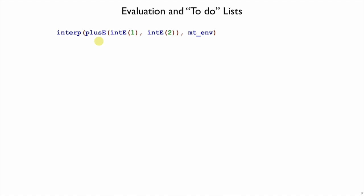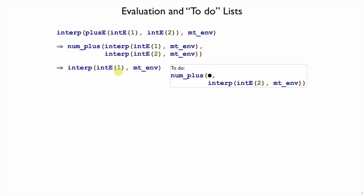Consider what happens when we interpret 1 plus 2 with our lambda interpreter. The interp function will dispatch to the plusy case, where it does a num plus on the interp of the two sub-expressions 1 and 2. And then that shplait interp function will be called. Meanwhile, shplait remembers that once this interp function produces a value, it goes inside of this num plus, and we need to do more work here. We need to interp 2, and then eventually add things together.